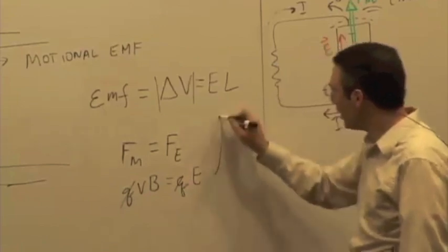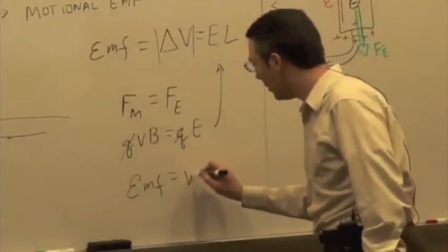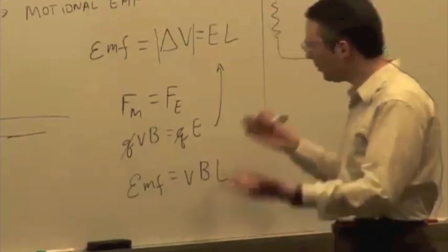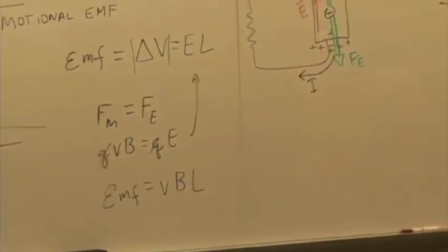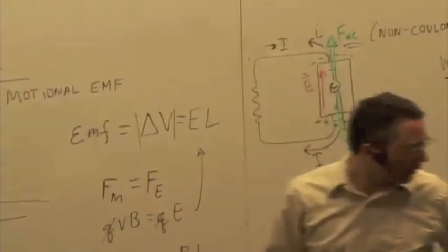We can plug that electric field into here and we find that the EMF is going to be V times B times L. So we can calculate this if we knew how fast the—if we knew the dimensions, right? How fast the object's moving, magnetic field, and the length of the bar.